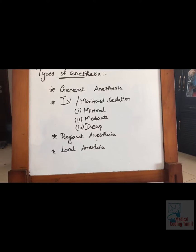Regional anesthesia numbs a large part of the body. For example, in a cesarean delivery, it numbs the stomach. The patient remains awake, can see what the procedures are doing, and can even have a conversation with doctors. Local anesthesia numbs only a small part of the body.